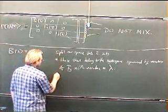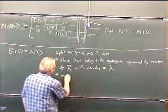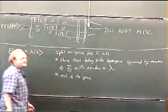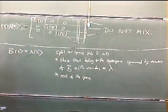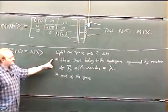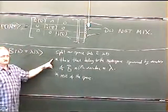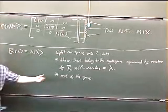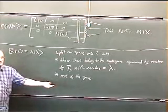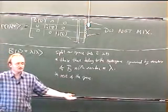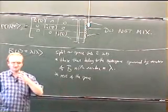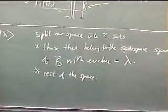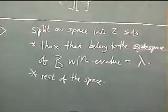So that's the one part, and then I include the rest of the space. My logic is going to be the following: I'm going to try to show that the eigenvalue-λ subspace is so big that it is the whole space. If this is the whole space, that means every single vector has eigenvalue λ. But the only matrix that has every single eigenvector with the same eigenvalue is a multiple of the unit matrix. So that's the logic of the proof.